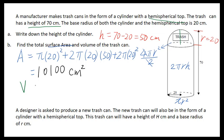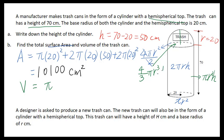Now let's go to volume. For the cylinder volume, it will be πr²h. The volume for the hemisphere will be (4/3)πr³ — that's the full sphere formula — then divide it by 2, which means multiply by one half.